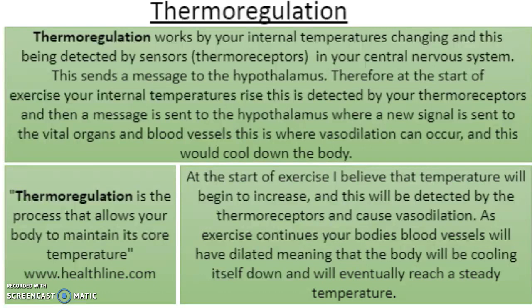Thermoregulation is the process that allows your body to maintain its core temperature. It works by internal temperature changes being detected by thermoreceptors in your central nervous system, which send a message to the hypothalamus. At the start of exercise, internal temperatures rise, detected by thermoreceptors, and a message is sent to the hypothalamus which sends a signal to the vital organs and blood vessels, where vasodilation can occur to cool the body down. As exercise continues, the blood vessels dilate, cooling the body, and eventually a steady temperature is reached.